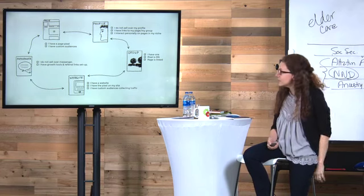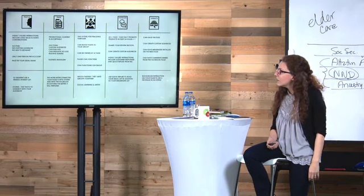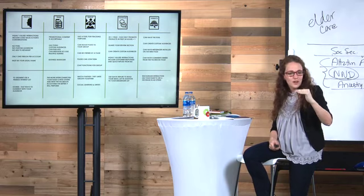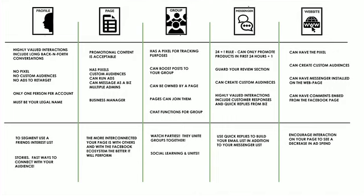We want our entire Facebook ecosystem optimized so we can get results. On our profile there are actions that get more exposure; on our page, more exposure; in a group, more exposure. Then there are ninja tactics — when you combine those with everyday content, you can snowball engagement. For example, watch parties: put content on your page, share it into a group in a watch party, get tons of comments and engagements, and your content blows up on your page.